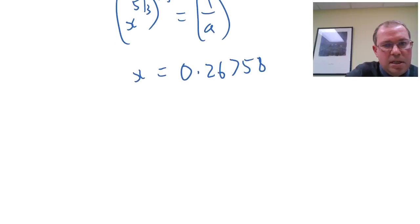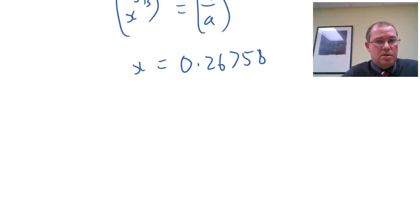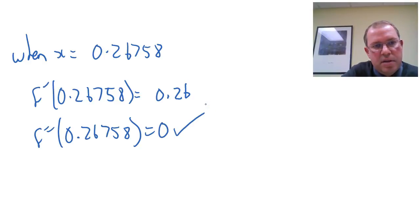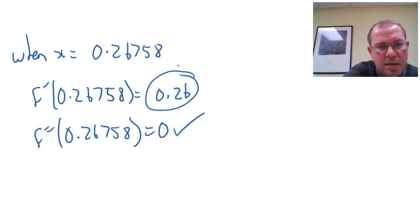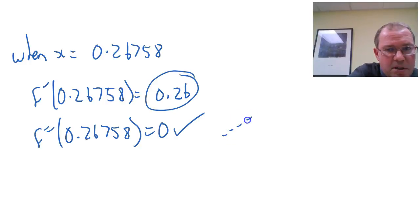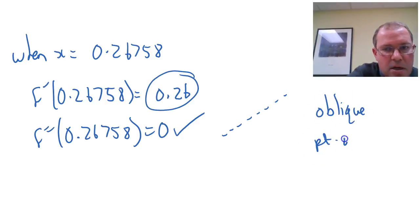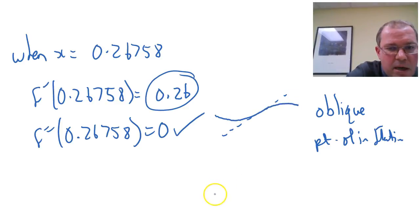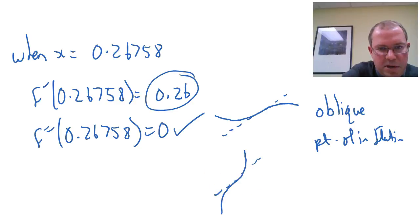We know something is happening at 0.26758. The second derivative is zero there — that's how we found the point. I've subbed 0.26758 into the slope function and got a value of 0.26, so the slope is very slightly positive. That tells us this is an oblique point of inflection. The concavity could change from concave up to concave down, or the other way around — we'll know when we put the graph together.